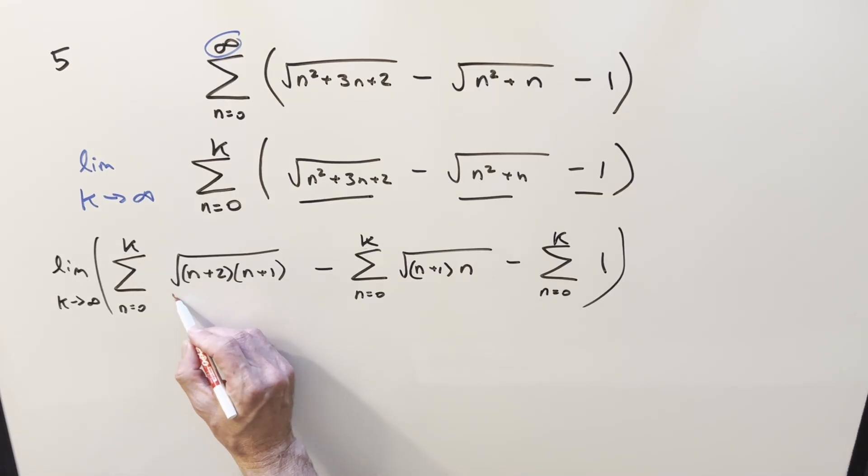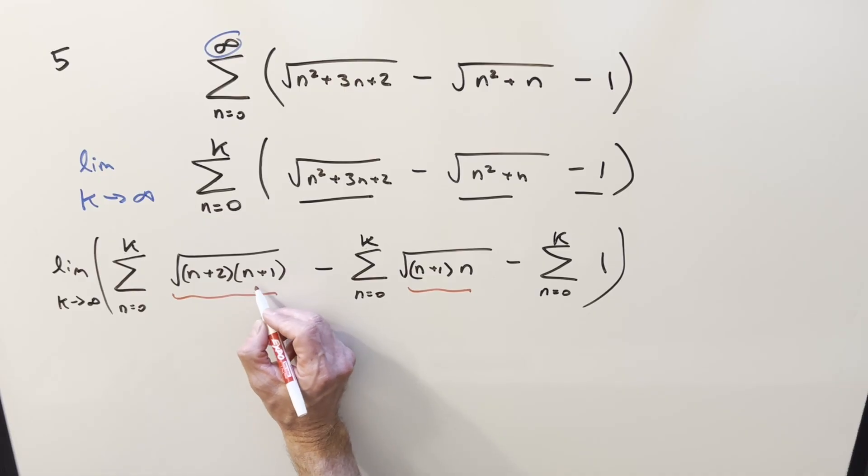These are basically the same thing. They're just off by a factor of one. All I need to do here is an index change. If we subtract one on the n terms, I just need to subtract one here and here.